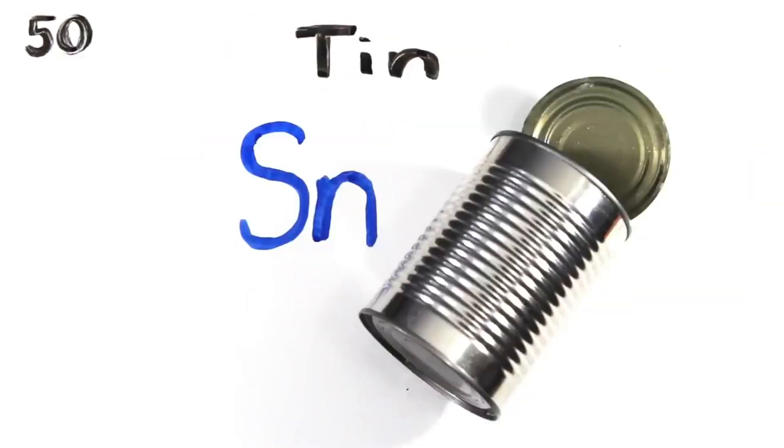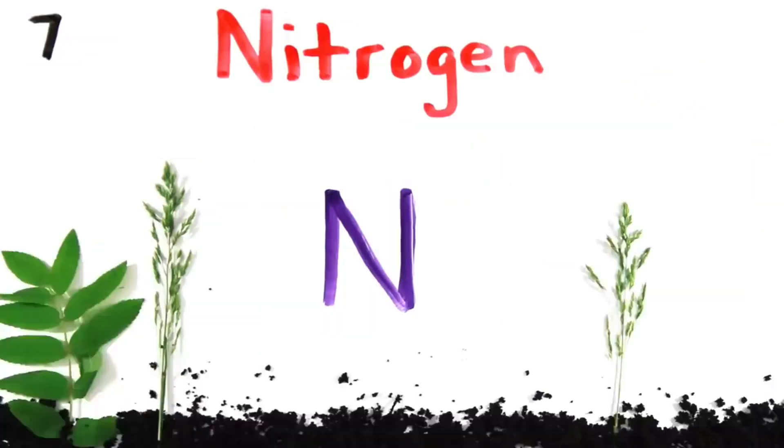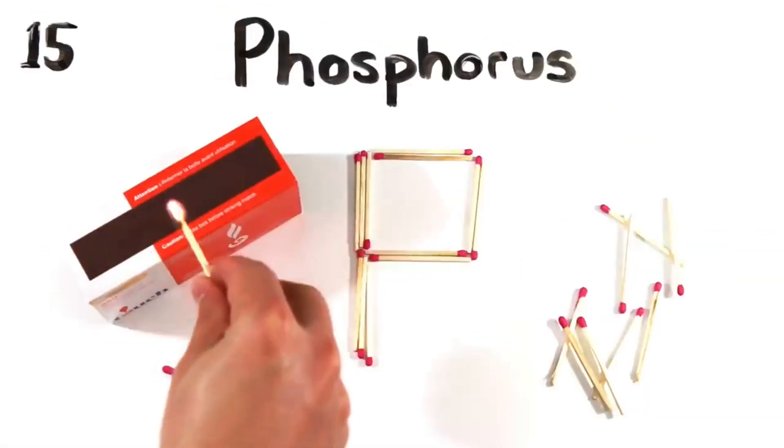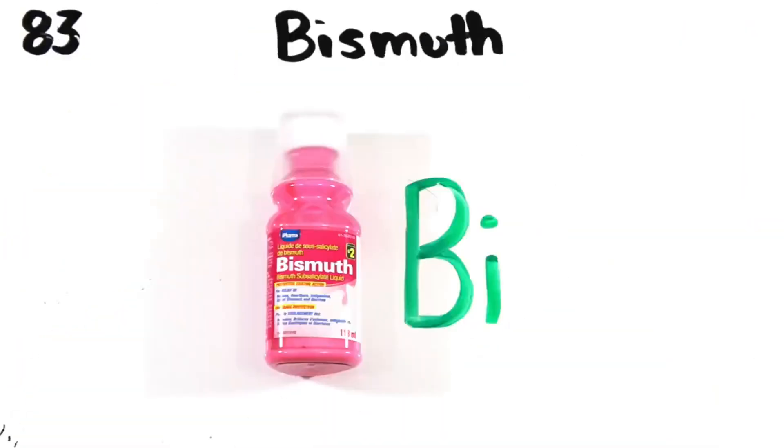Silicon, Germanium and tin cans, Lead, Flerovium, Nitrogen all through the air with Phosphorus and Arsenic, Antimony, Bismuth for your tummy,